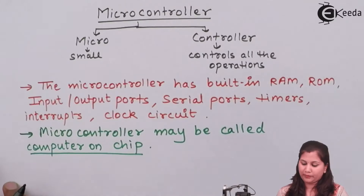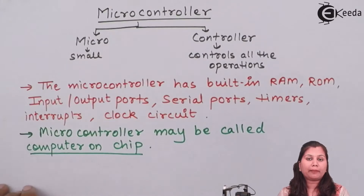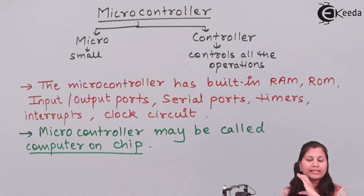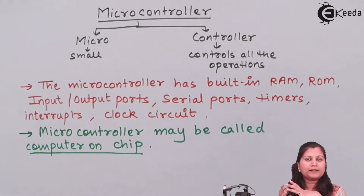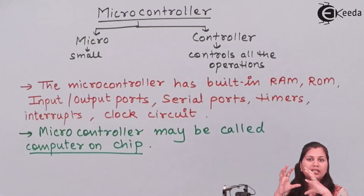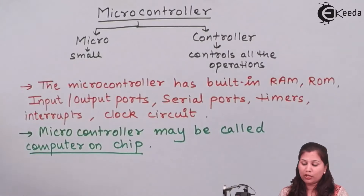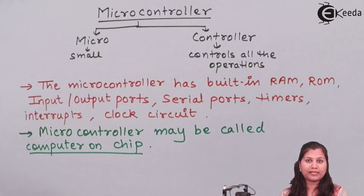Another name for microcontroller is the on-chip computer because it has all the components embedded on a single chip. Now if we compare this microcontroller with microprocessors: microprocessors have a CPU, a separate memory, a separate block for input-output ports, and separate blocks for interrupts, timers and clock circuits. So everything is separate in microprocessors.